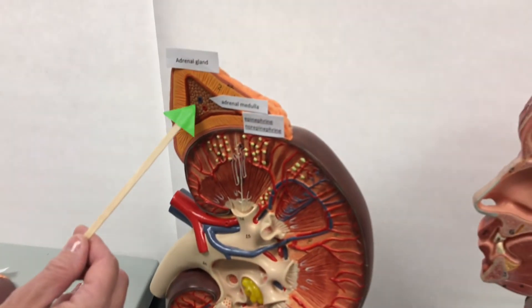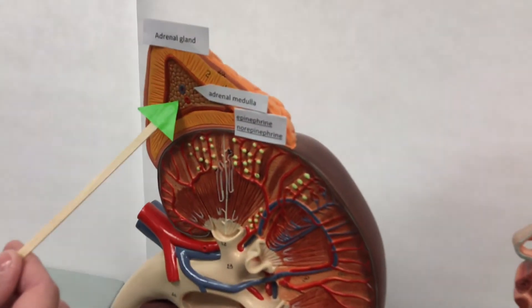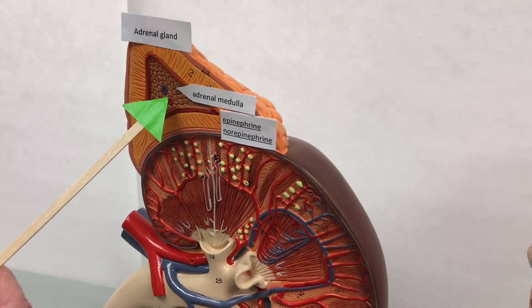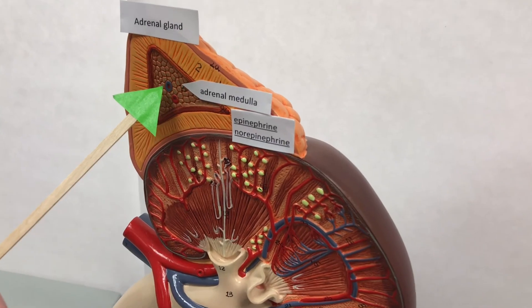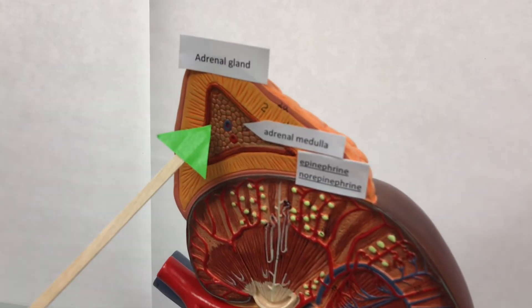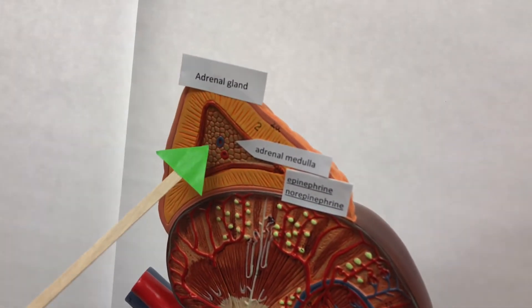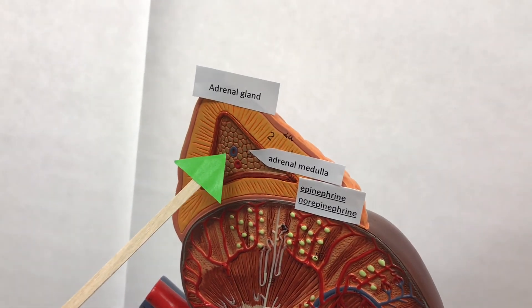The adrenal medulla secretes epinephrine and norepinephrine. These are the short stress hormones, and they play a role in the fight or flight response.